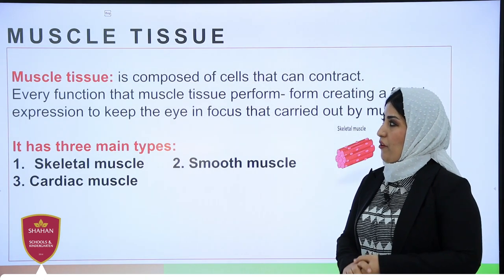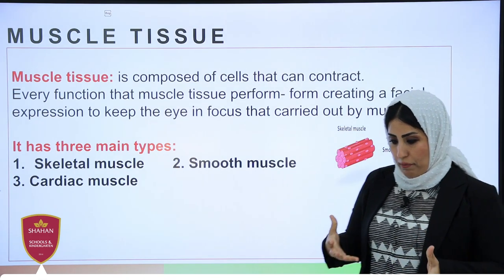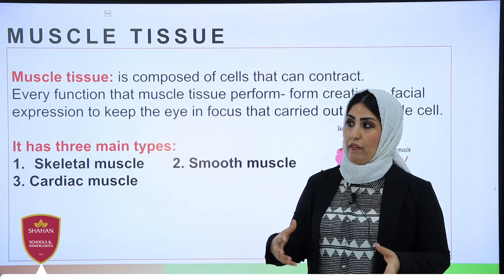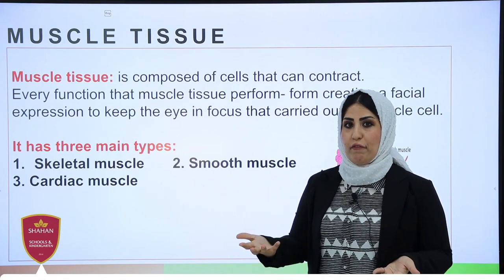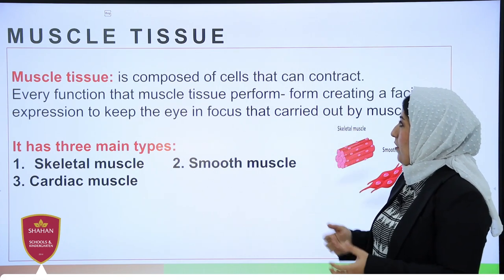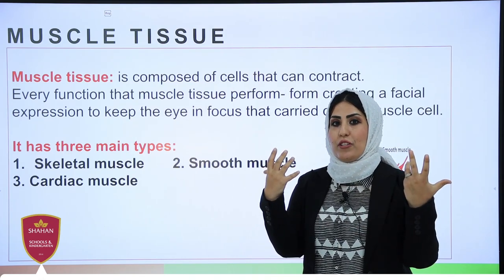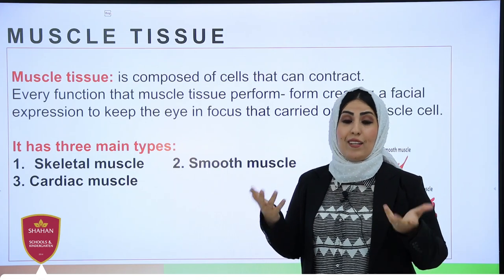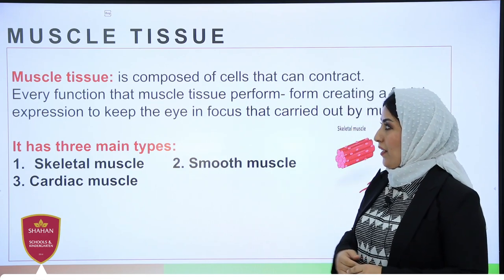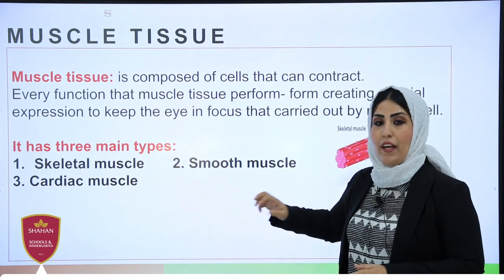We need to talk about the first type of tissue which is called muscle tissue. It's composed of a type of tissue which has the ability to contract and relax. We need to have relaxation and contraction during different functions in our life. They also perform the function of creating facial expressions — expressions such as happiness, sadness, loneliness, and any of them. This kind of tissue is responsible. It also has three main types which are called skeletal muscle, smooth muscle, and cardiac muscle.